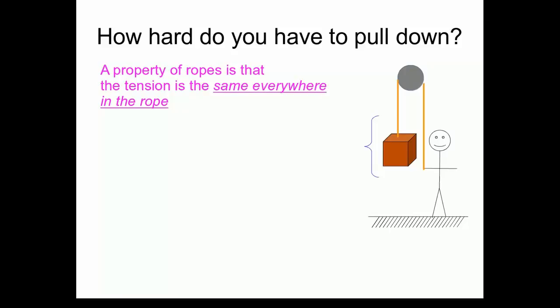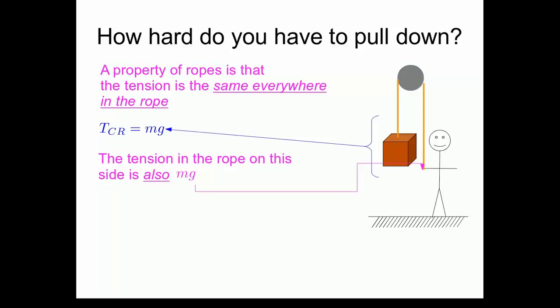Well, we solved for the tension over here where the crate is connected to the rope. By analyzing this part of the system, we were able to conclude that the tension on the crate from the rope was equal to the weight of the crate. The fact that the tension has to be the same everywhere in the rope means that the tension in the rope over here, where it meets my hand, is also equal to the weight of the crate, mg.